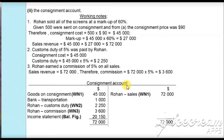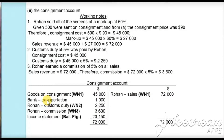We will now make the consignment account, which works like a profit and loss account — it is a nominal account. The rules are: debit all expenses, credit all incomes and gains. The income here is sales revenue, so we credit Rohan's sales revenue of $72,000. In Rohan's account this will be debited to complete the double entry. The cost of goods sent on consignment, $45,000, is debited. The transportation cost of $1,000 was already credited in the bank account and is now debited here, completing that double entry.